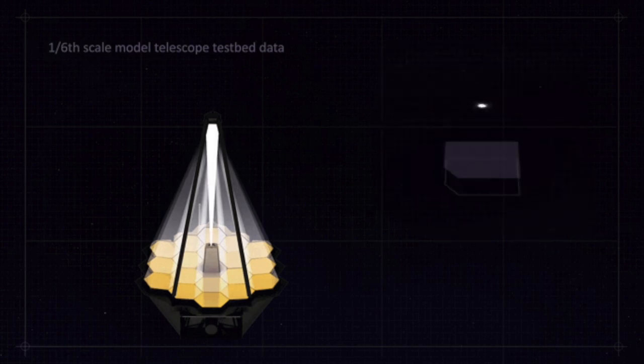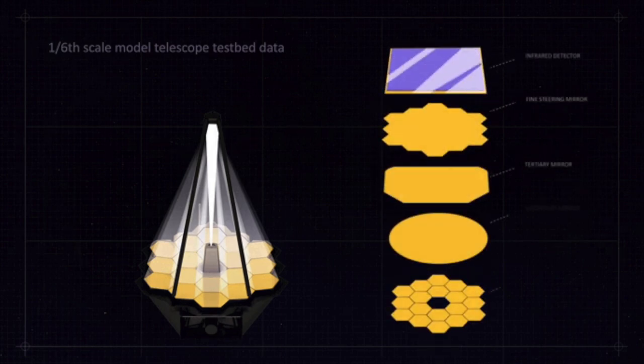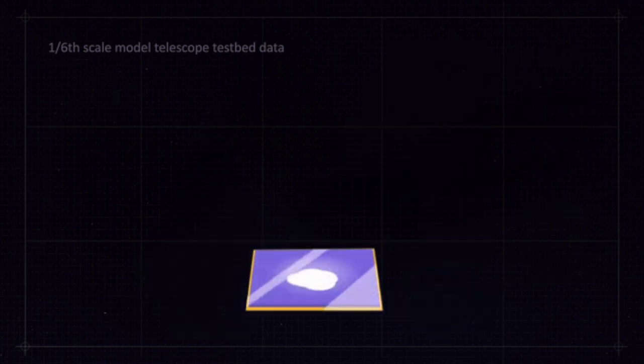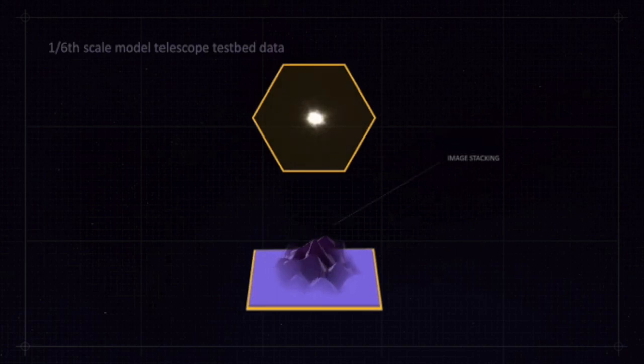In summary, the James Webb Space Telescope is a remarkable astronomical instrument designed to revolutionize our understanding of the universe, particularly in the near-to-mid-infrared regions, unveiling ancient celestial phenomena and providing invaluable insights into cosmic history.